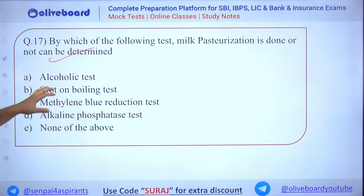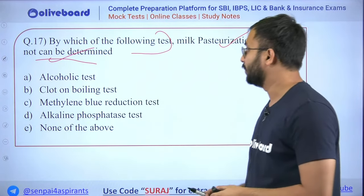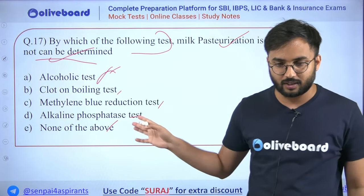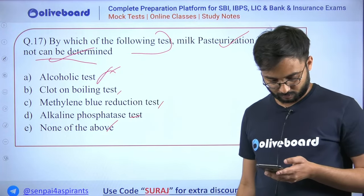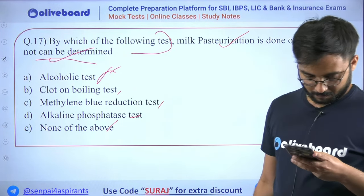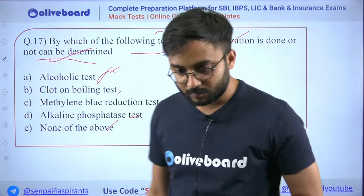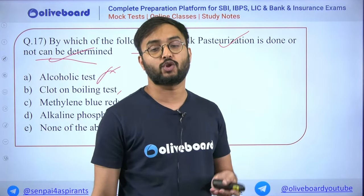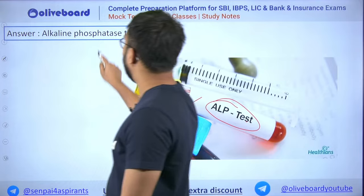By which test can milk pasteurization be determined? Options include alcoholic test, no-clot-on-boiling test, and others. The answer is the Alkaline Phosphatase (ALP) test — done to know whether milk is pasteurized or not. Methylene blue is not for checking pasteurization.